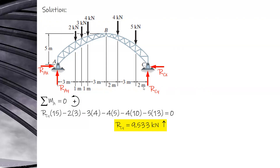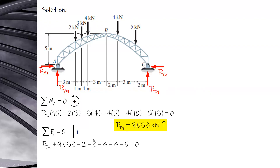Now you have the value of the reaction RCY. You can then sum up forces along Y in order to solve for RAY. RAY is equal to 8.467 kN upward.